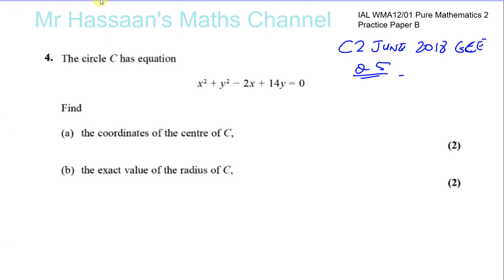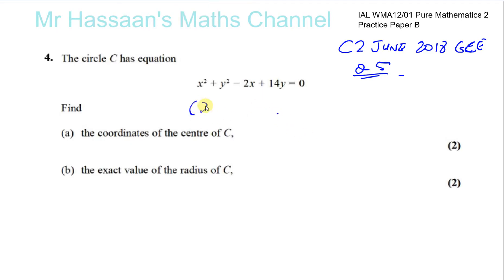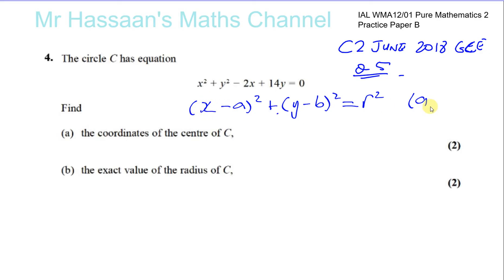If we express the equation in the form (x minus a) squared plus (y minus b) squared equals r squared, then the value of x that makes the first bracket zero gives the x-coordinate of the center, and the value of y that makes the second bracket zero gives the y-coordinate. The square root of r squared gives the radius. So we need to express the equation in this standard form.